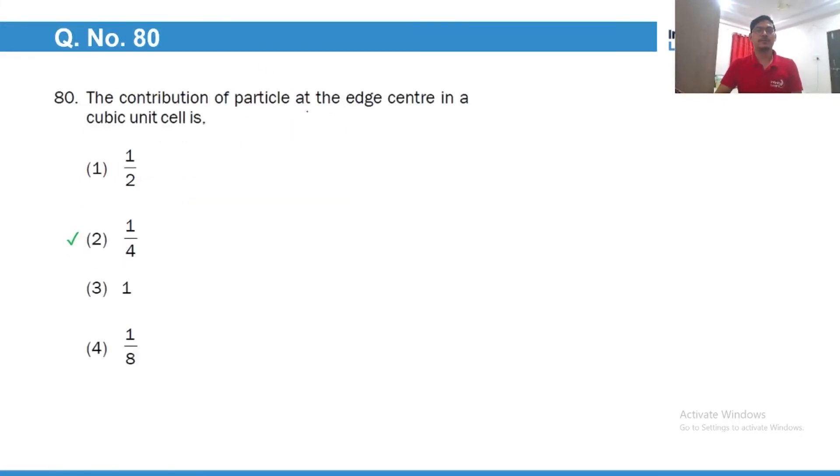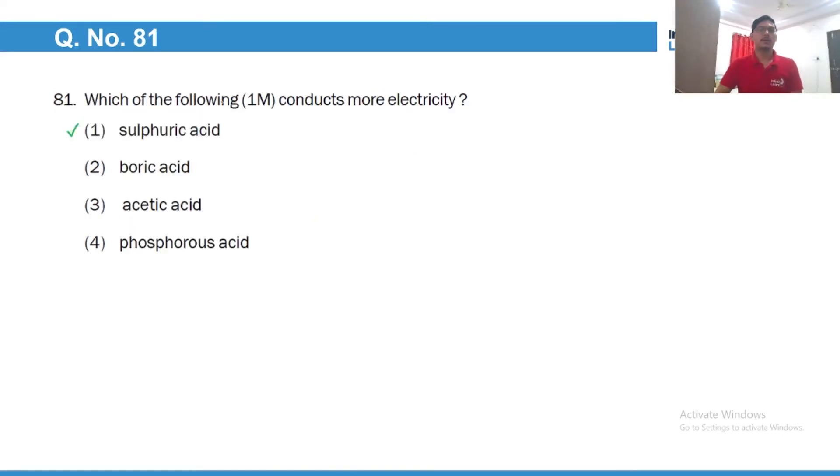The contribution of particle at the edge centre in a cubic unit cell is 1 by 4, because each edge centre particle is shared with 4 neighbouring unit cells. In total 4 unit cells like this, so one here, another there and 2 unit cells on the top. Which of the following conducts more electricity? Sulfuric acid because it is a strong acid, whereas boric acid, acetic acid and phosphorous acid they are weak acids.